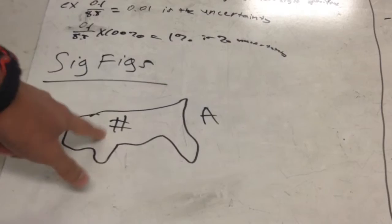Otherwise, if the decimal is present, you start from the left side and keep counting from the first non-zero digit.